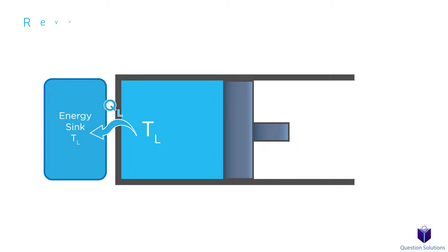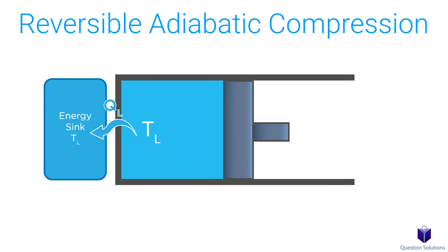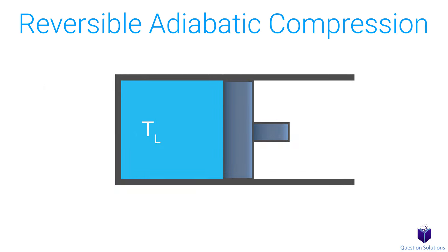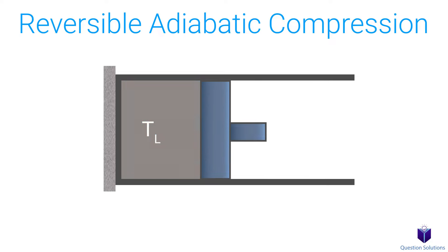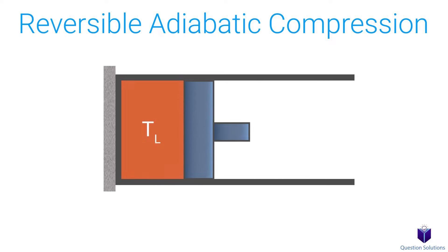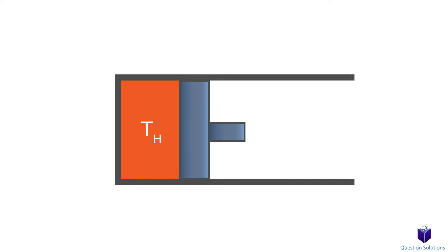The fourth and last step is called the reversible adiabatic compression. The low-temperature energy sink is removed and insulation is placed back on the cylinder head. The gas continues to be compressed and goes back to its initial state — the temperature rises from TL to TH — and the cycle is now complete.